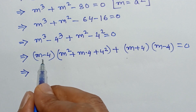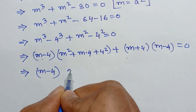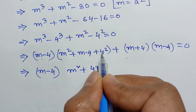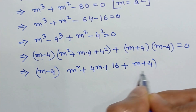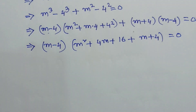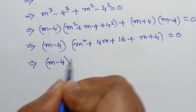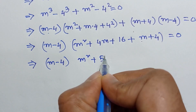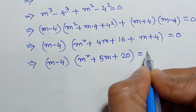Taking (m − 4) as a common factor, we write (m − 4)[(m² + 4m + 16) + (m + 4)] = 0, which simplifies to (m − 4)(m² + 5m + 20) = 0.